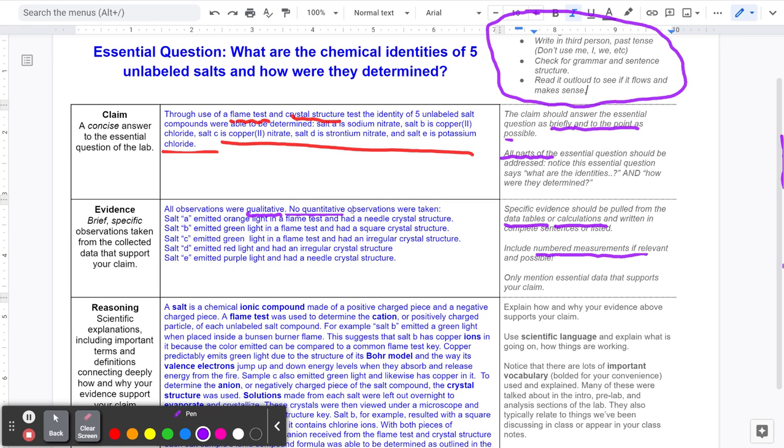And that's okay. For this lab, there wasn't really many numbered measurements that could be taken. But if possible, include numbered measurements, especially where relevant to answering the purpose of the lab. Only mention essential data. Essential data is all you really need. You probably do a lot of steps. You don't need to list all the different procedures that you took. You just need to list the specific data. So, pause the video and see the specific data that was listed here.